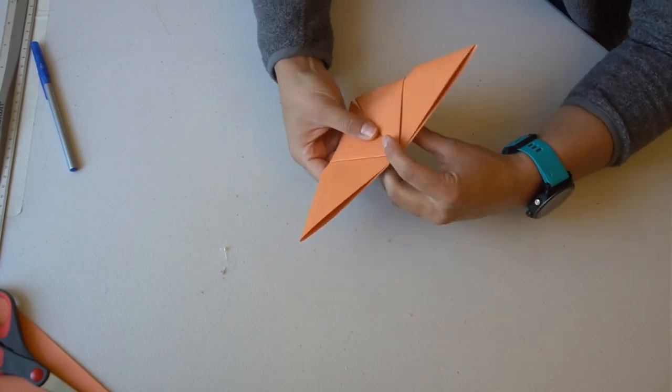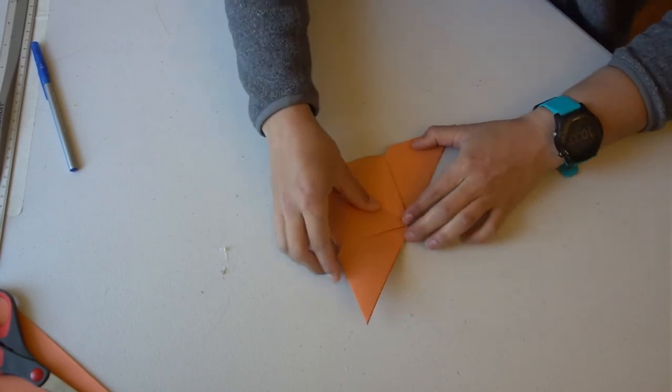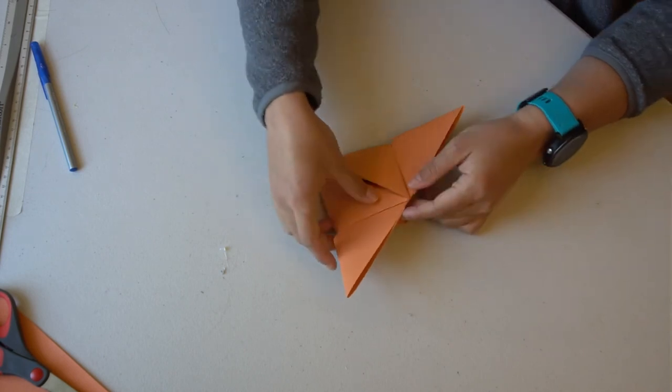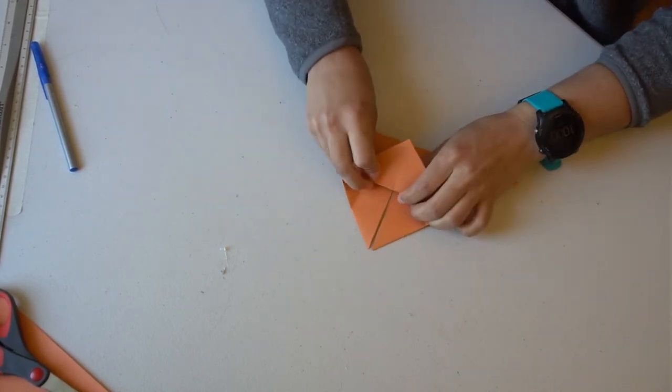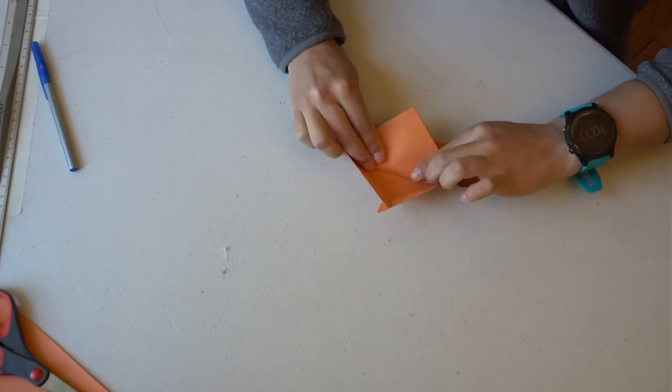At this point, I realized that the small triangle I folded over the edge wasn't quite big enough and wasn't holding together my butterfly, so I went back and made that triangle a little bit bigger by folding it more over the edge.